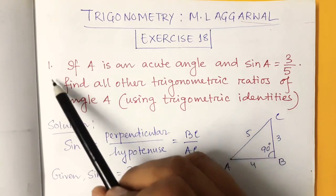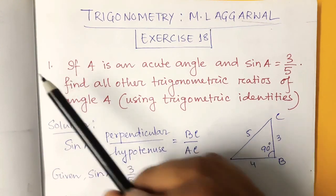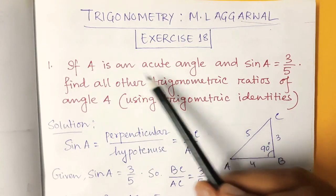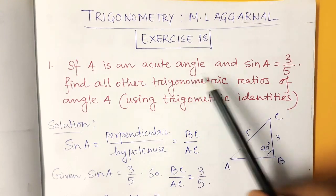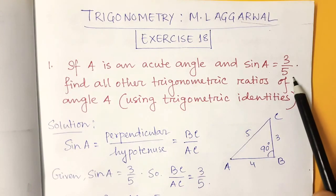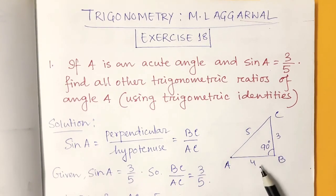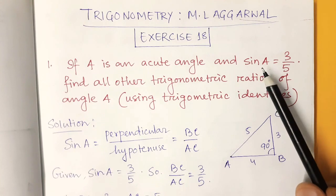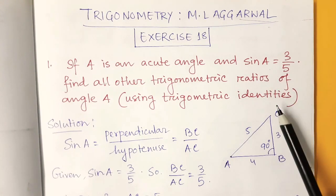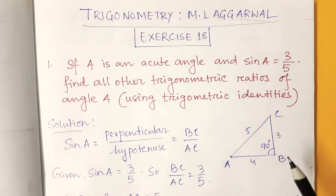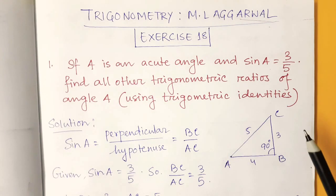So this is problem number 1. Given is A is an acute angle and sin A is 3 by 5. So first consider this triangle. In such kind of problem, you always consider a triangle — then it will be convenient for you to solve the problem.